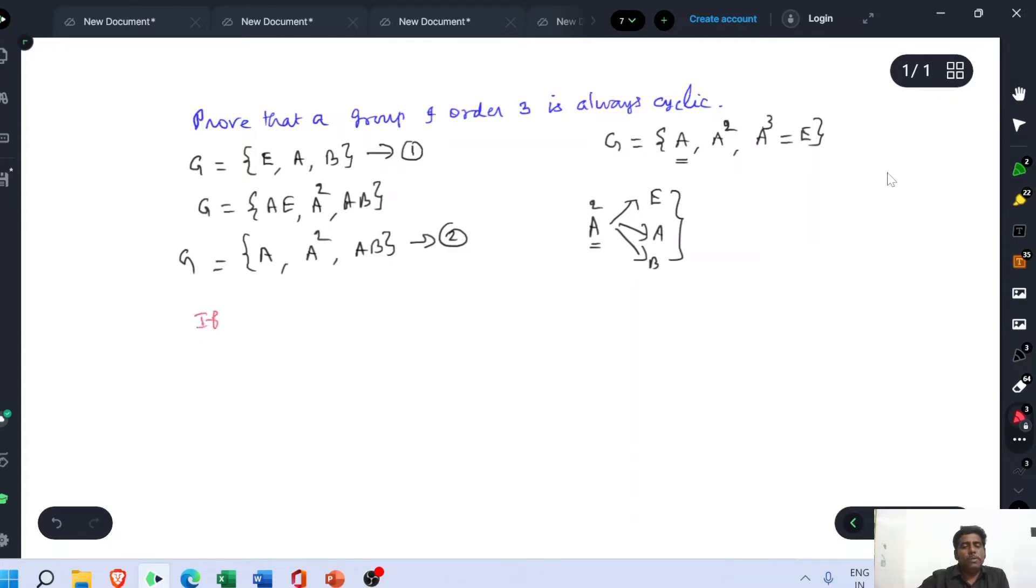If A square is equal to E, then the equation two is modified as G equal to A, instead of A square we have to put E. Then what could be the value of AB? Now compare this equation two with equation one. The elements of equation one are E, A, and B. A is present as such, A square is written as E. So the left out element is B. Therefore, the value of AB equal to B. This is equation three.